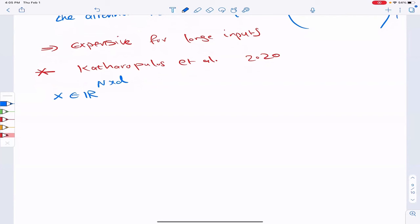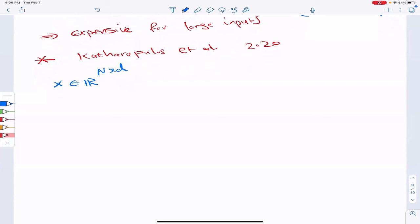Suppose we have n tokens, and each token has d values. In the previous example, d was 512, and n was 3 because we had 3 input tokens. So that's the matrix X, so you can think about the transformer as a mapping from n tokens, each represented with d values.